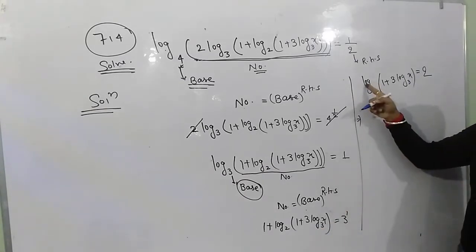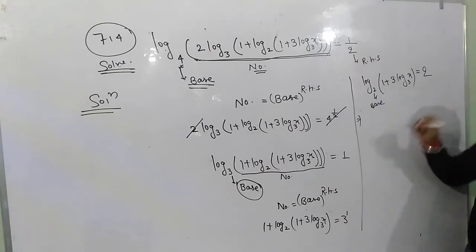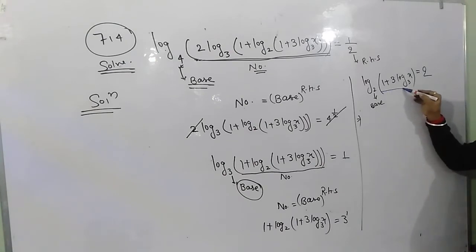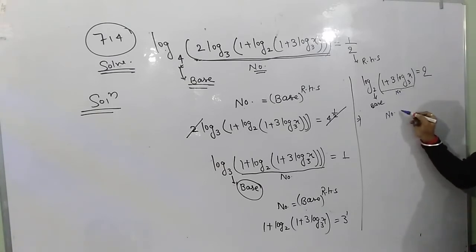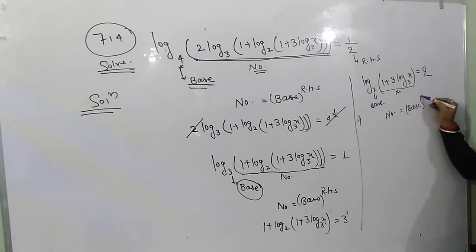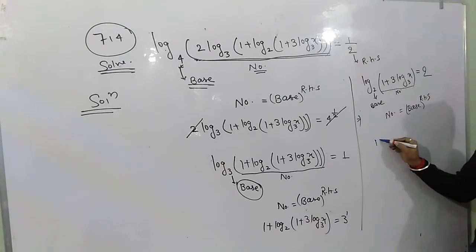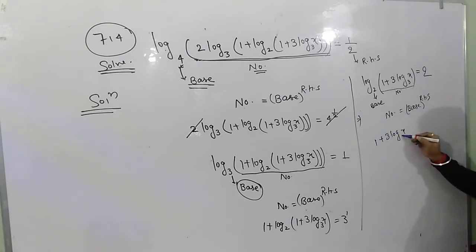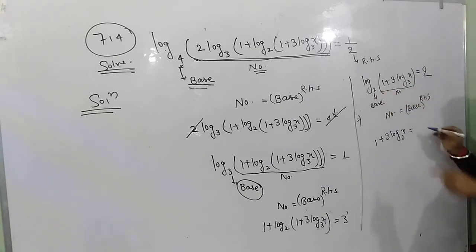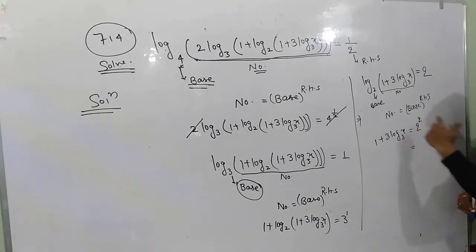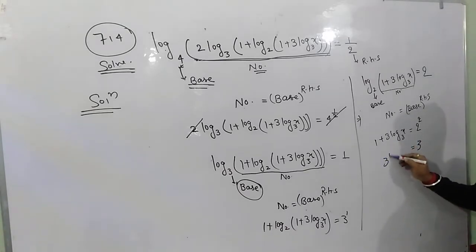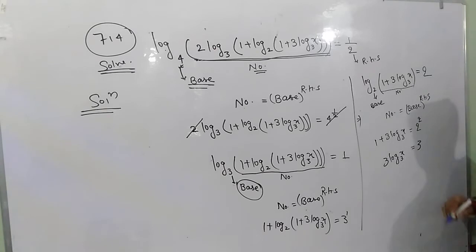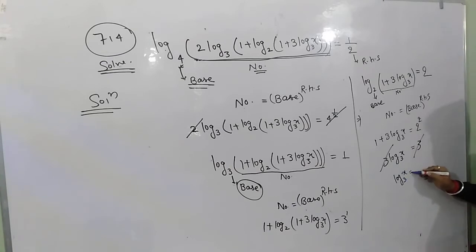जब यह log है तो 2 क्या हो गया — base। और यह पूरा part number हो गया। Number is equal to base to the power RHS. तो: 1 + 3 log x base 3 = 2 to the power 2 = 4. 1 subtract हो गया — 3 log x base 3 = 3. अब 3 और 3 cancel होंगे। मिलेगा: log x base 3 = 1.